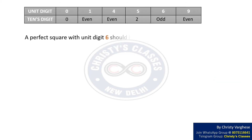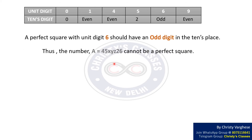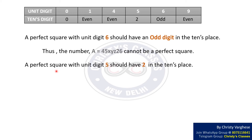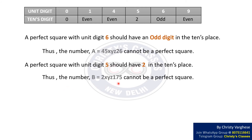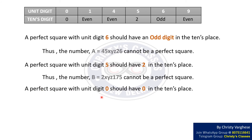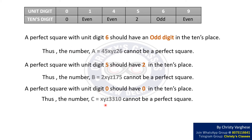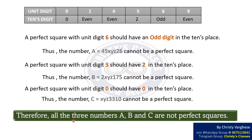From the above table, we can clearly observe that a perfect square with unit digit 6 should have an odd digit in the tenth place. The number A = 45xy326 has tenth digit 2, so it cannot be a perfect square. A perfect square with unit digit 5 should have 2 in the tenth place, so B = 2xy175 cannot be a perfect square. A perfect square with unit digit 0 should have 0 in the tenth place, so C = xy3310 cannot be a perfect square. Therefore, all three numbers A, B, and C are not perfect squares.